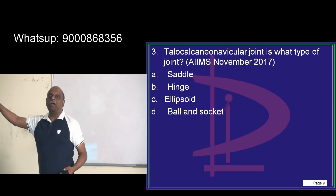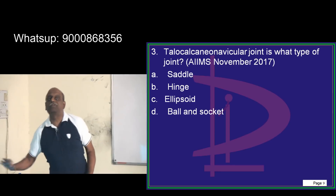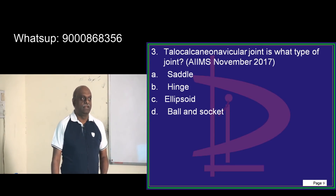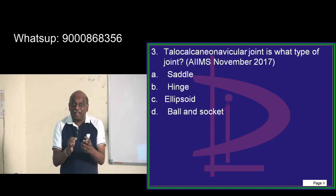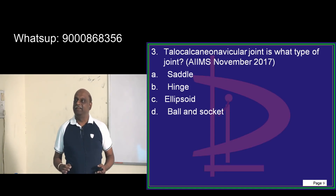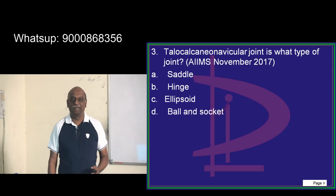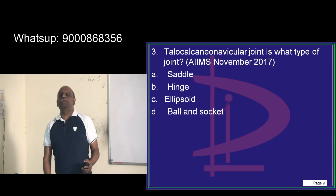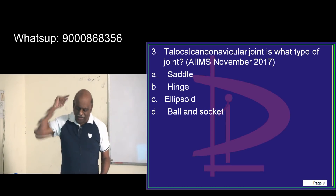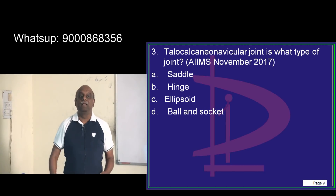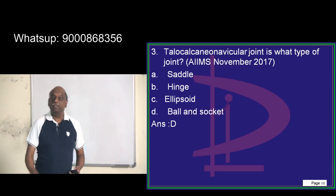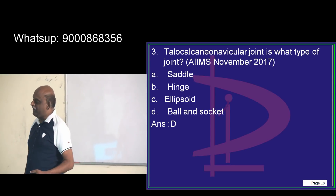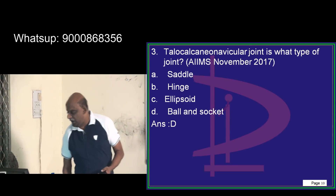The examiner's question on the talocalcaneo-navicular joint asks: what type of joint is it? The answer is a synovial joint. If you miss a question on the type of joint, you are not prepared. It is a ball and socket type of joint — that is what you should be doubly sure about.